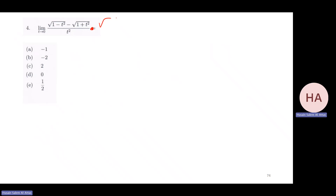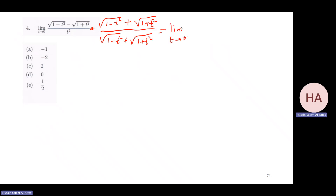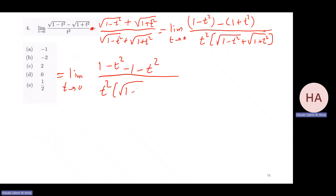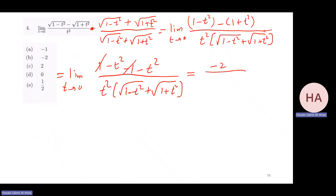Rationalize by multiplying by the conjugate. After the multiplication, the limit as t goes to zero gives one minus t squared minus one plus t squared over t squared times the denominator. In the numerator we have one minus t squared minus one minus t squared. After cancellation we get minus t squared minus two t squared, so t squared cancels, leaving minus two over the square root of one plus one. The limit is minus one.